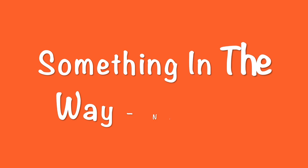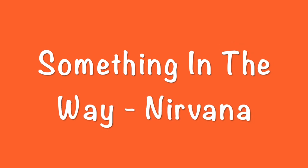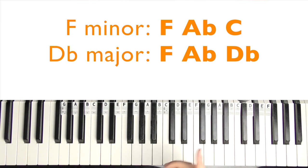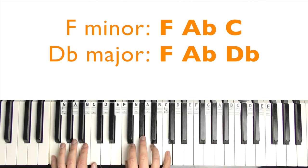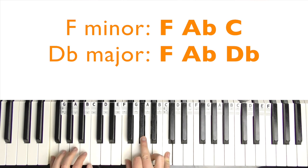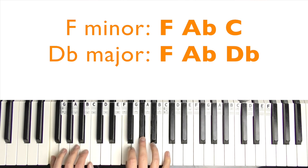So the next song is Something in the Way by Nirvana. So I've listened to the live version of him playing this, and the chords he uses is F minor. So you have F, and then F, A flat, and C. And then D flat major. So all you're going to do there is turn the C to a D flat.